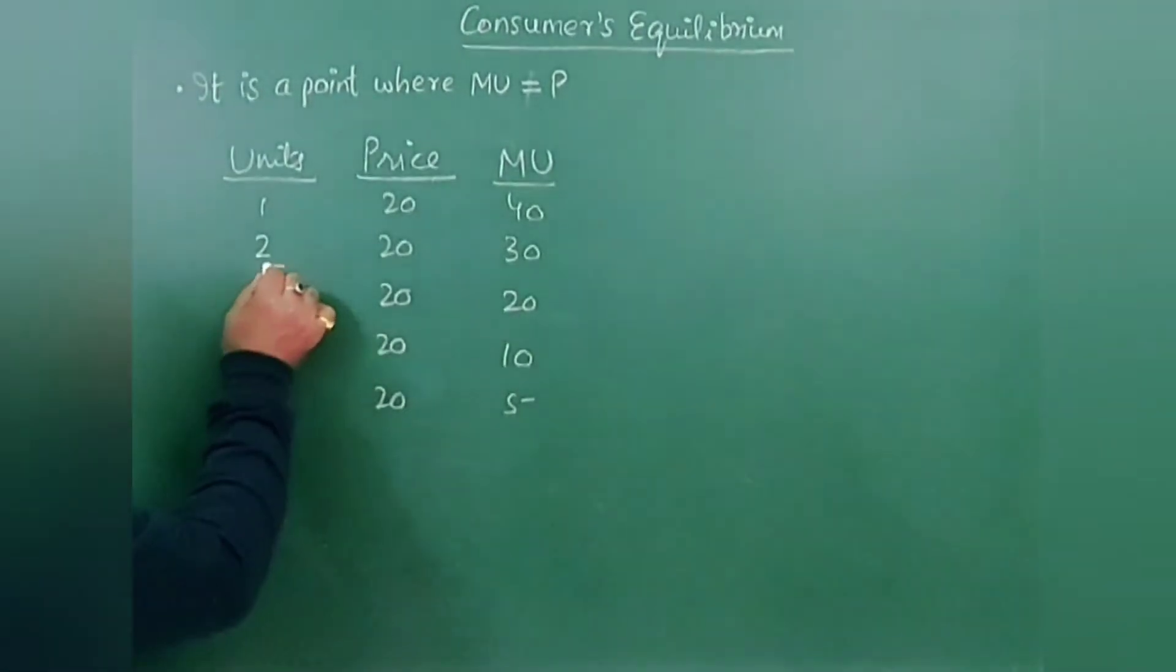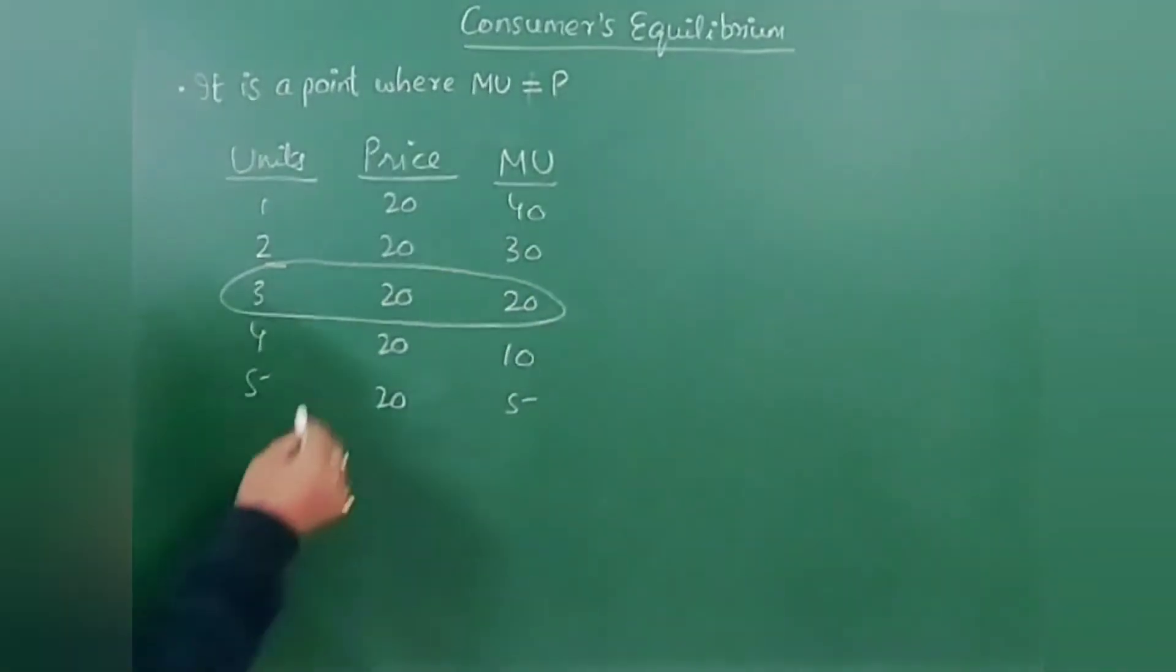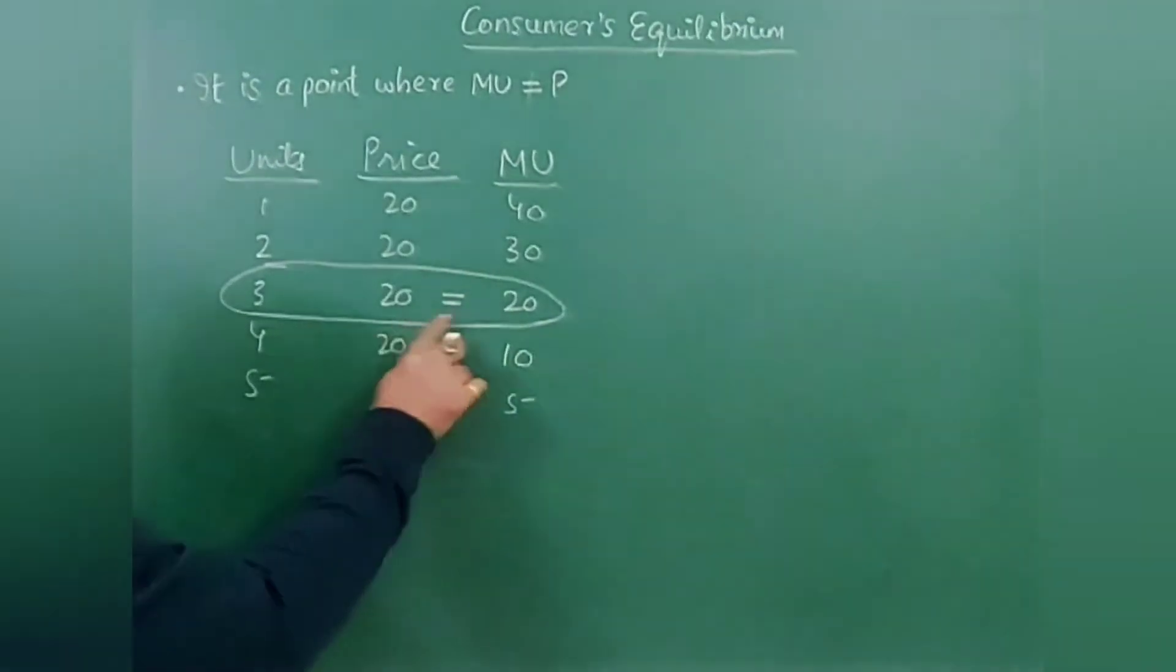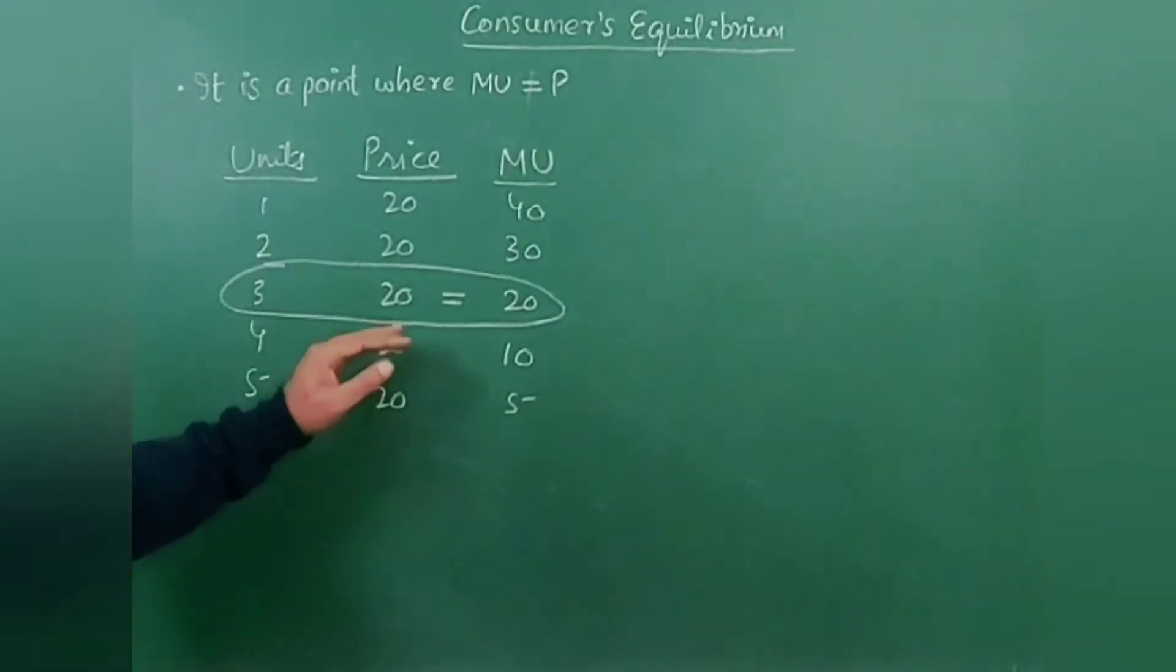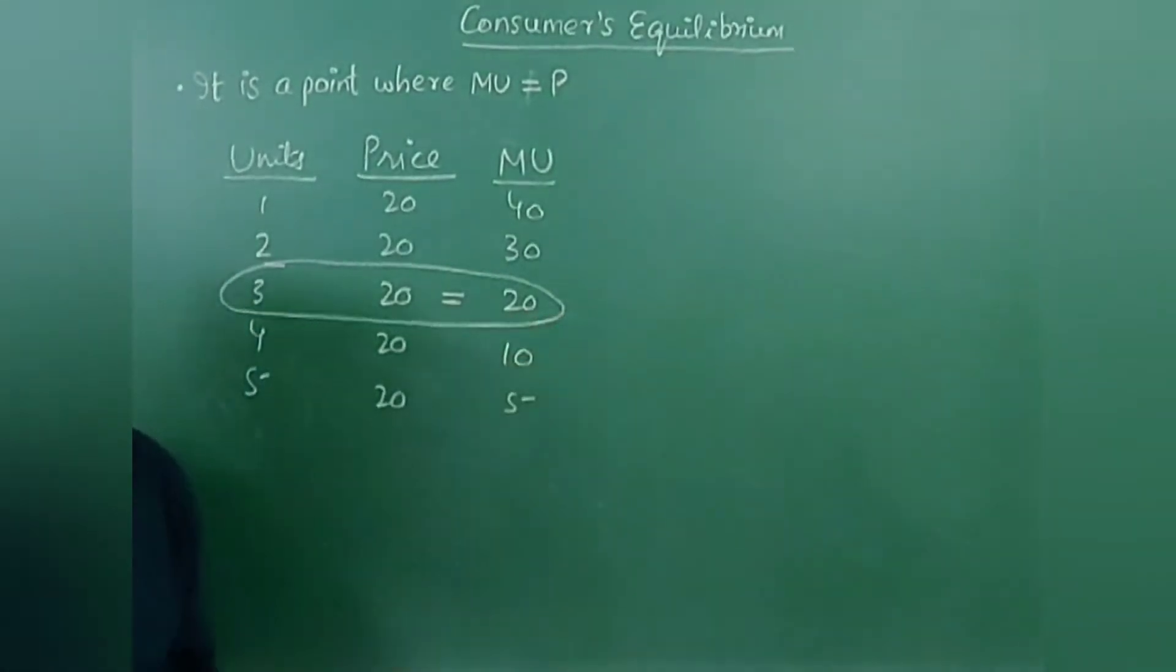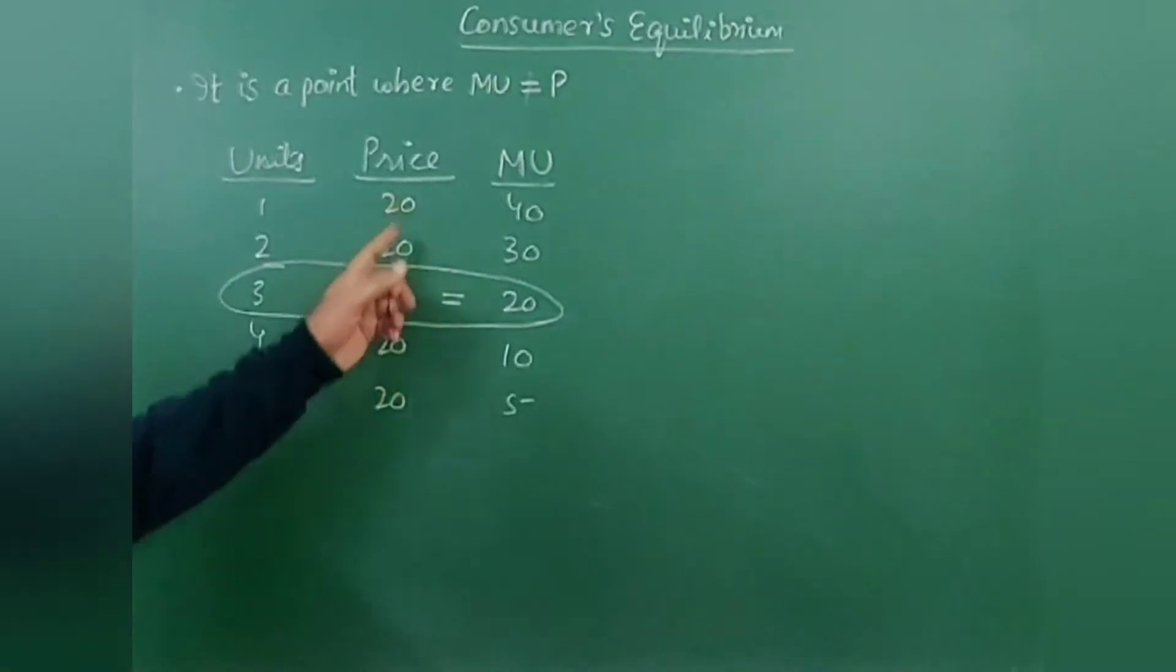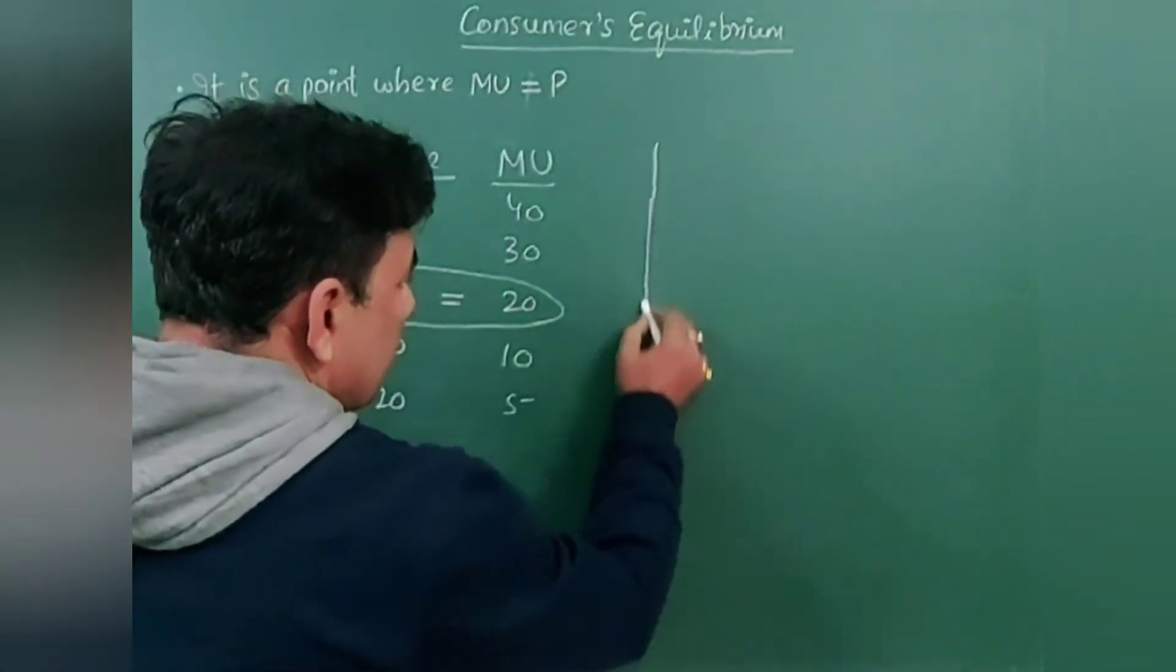Now when you look at this very carefully, you will see that at this point, the price is equal to marginal utility. So this point, that means these three units, is called consumer's equilibrium. By spending 20 rupees and consuming three units, you will get maximum satisfaction at this point because here price is equal to marginal utility.